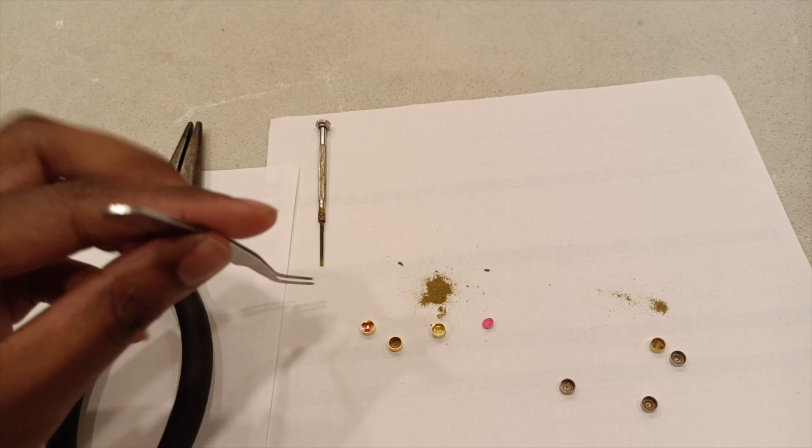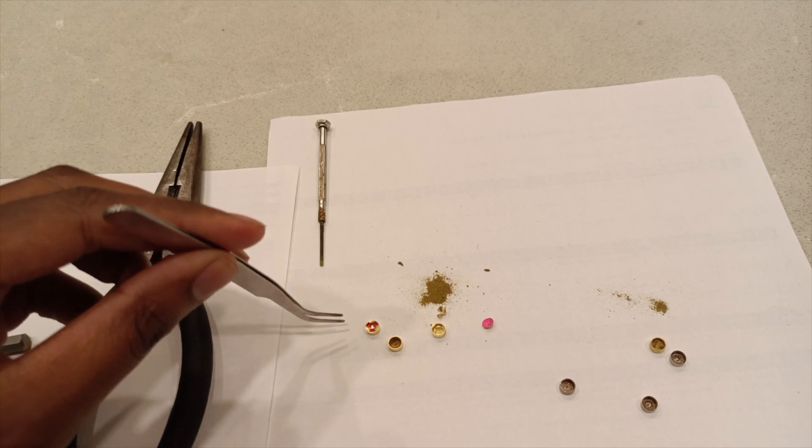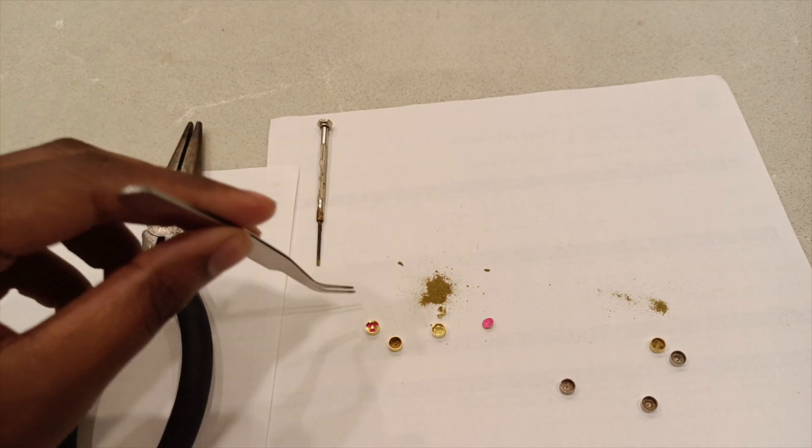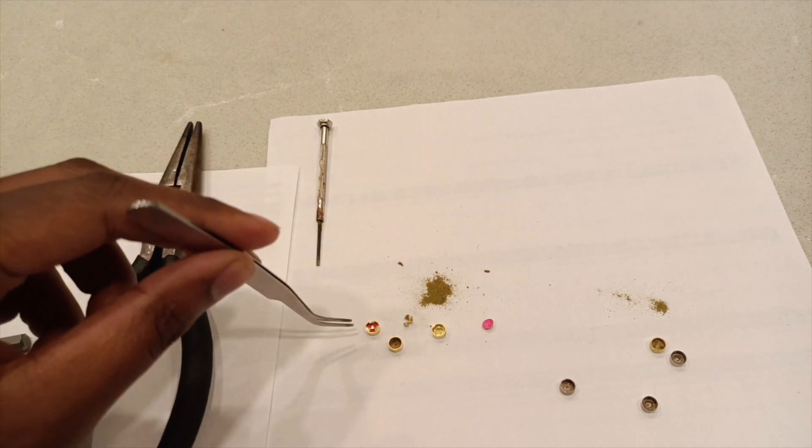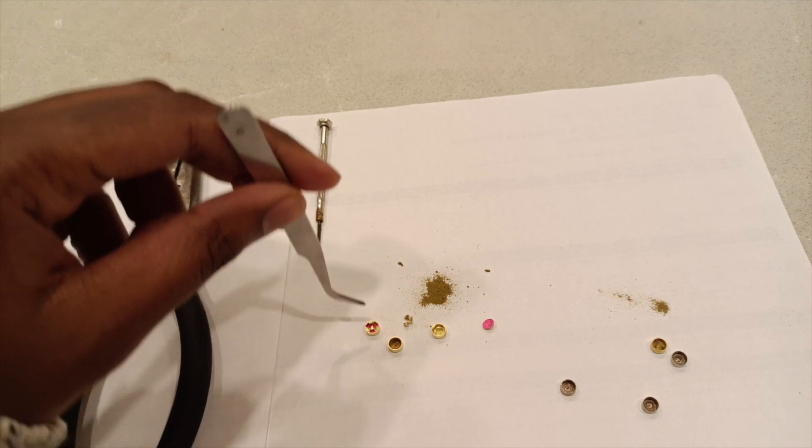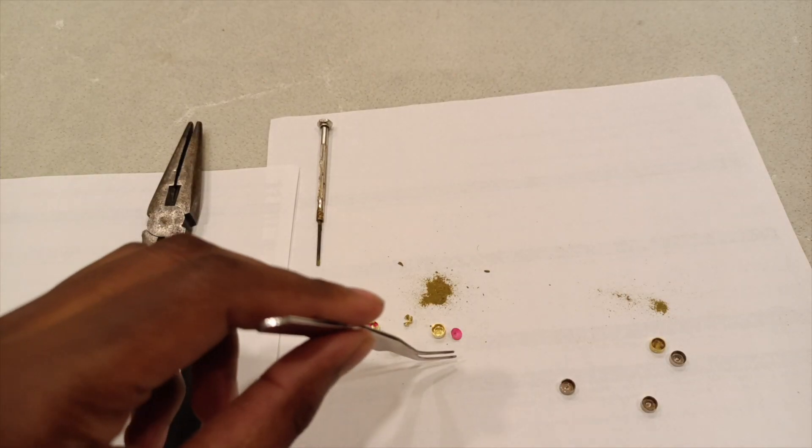The first step you want to do is take this primer here, the donor primer. You want to use your pliers to grab the primer and then pop out the anvil. You want to save that anvil because we'll be reusing it. After you take out the anvil, you want to take something to pry out the piece of paper and we will also be reusing this paper.